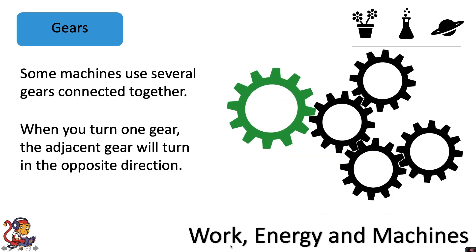Some machines use several gears connected together. When you turn one gear, the adjacent gear will turn in the opposite direction. For example, if we start at this green gear here, if we were to turn this clockwise, the adjacent gear would turn anti-clockwise and the one next to that would turn clockwise and so on.